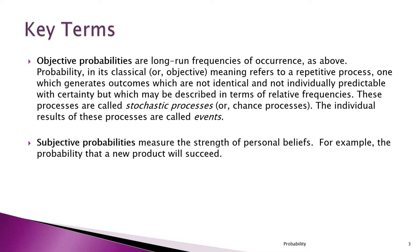The definition of probability we just saw is an objective probability — the classical mathematical definition as the long run frequency of occurrence of a particular event. On the other hand, a subjective probability is the kind we might use in ordinary conversation, not based on mathematics, and it measures the strength of our personal beliefs.